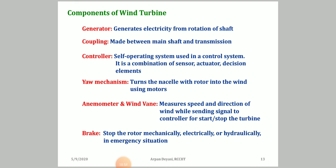Additional components include: (7) Generator — generates electricity from shaft rotation. (8) Coupling — connects main shaft to transmission. (9) Controller — a self-operating control system combining actuator, sensor, and decision elements. (10) Yaw mechanism — turns the nacelle with rotor into the wind using motors. (11) Anemometer and wind vane — measure wind speed and direction. (12) Brake — stops the rotor mechanically, electrically, or hydraulically in emergency situations. Not all wind turbines require all 12 components.